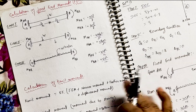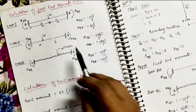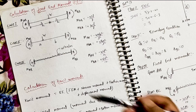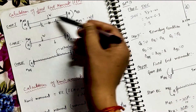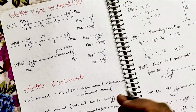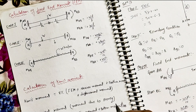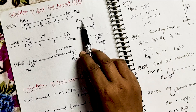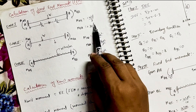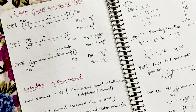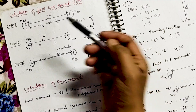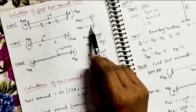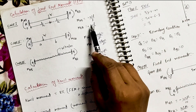Now, how to calculate the fixed end moments — what are the formulas? Case 1: a fixed beam of span L carrying a point load W at the mid-span. When the point load is acting at the mid-span, the fixed end moment at A is M_AB = −WL/8, and at B, M_BA = +WL/8. The moment at A is negative (anti-clockwise) and at B is positive (clockwise).